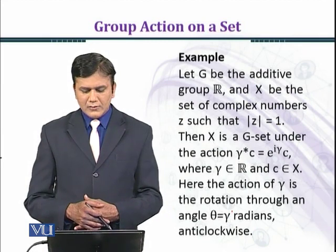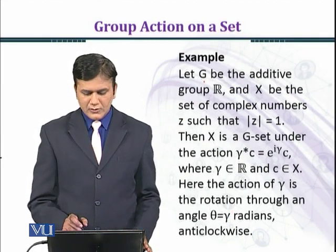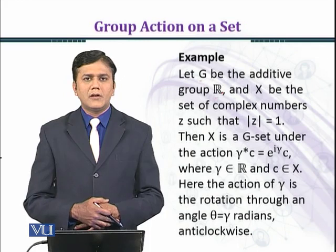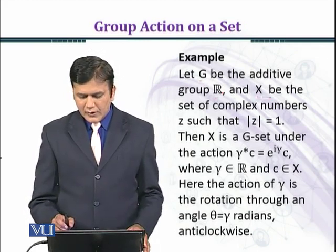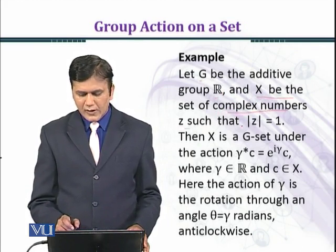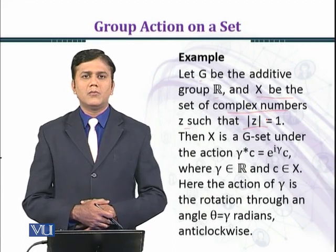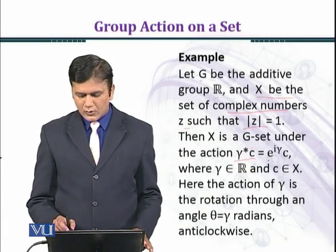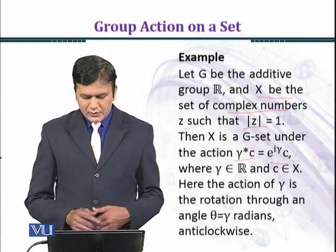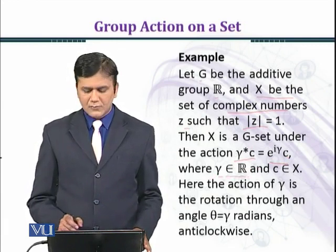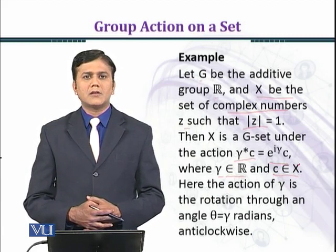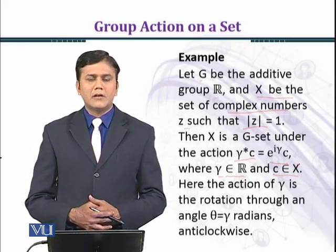Now we consider an example in which G is the set of real numbers. As we know, the set of real numbers under addition forms a group. Let X be the set of complex numbers z such that |z| = 1. Then X is a G-set under the action γ★c = e^(iγ)c, where γ belongs to ℝ and c belongs to X.